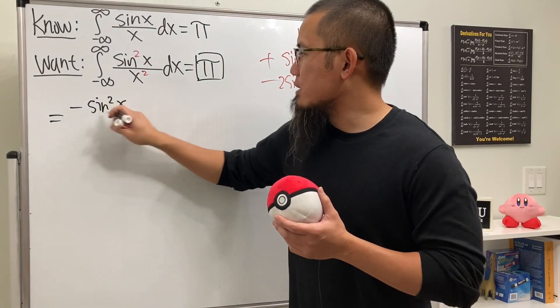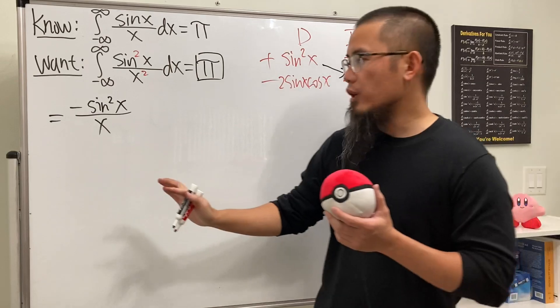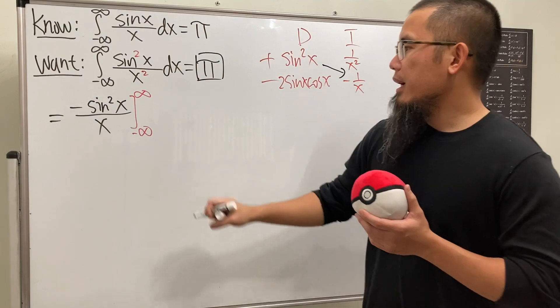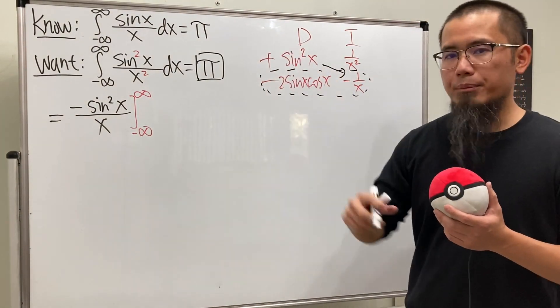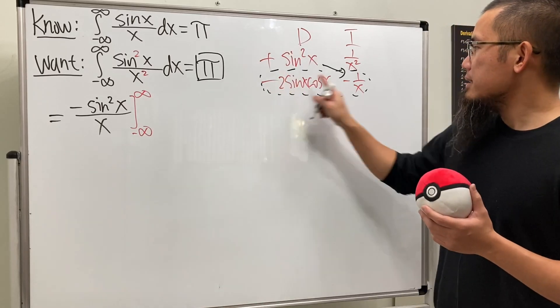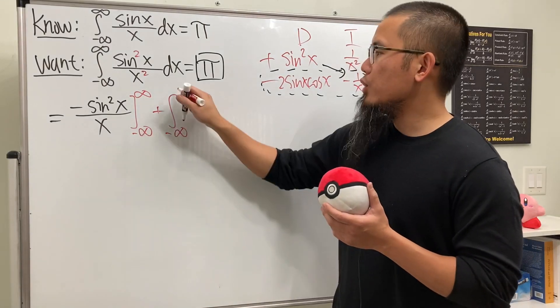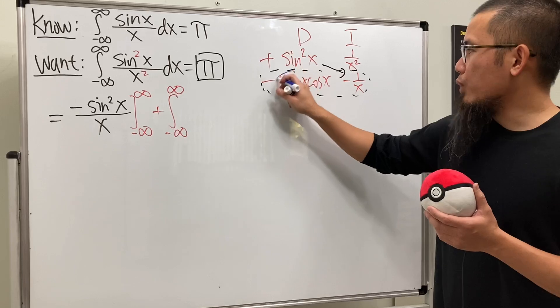Now this times that is the first part of the answer, so we will have negative sine squared x over x. That's the first part with no more integral, so we have to plug in the negative infinity and also the infinity. And then don't forget we have to multiply these two things together and then put that in an integral.